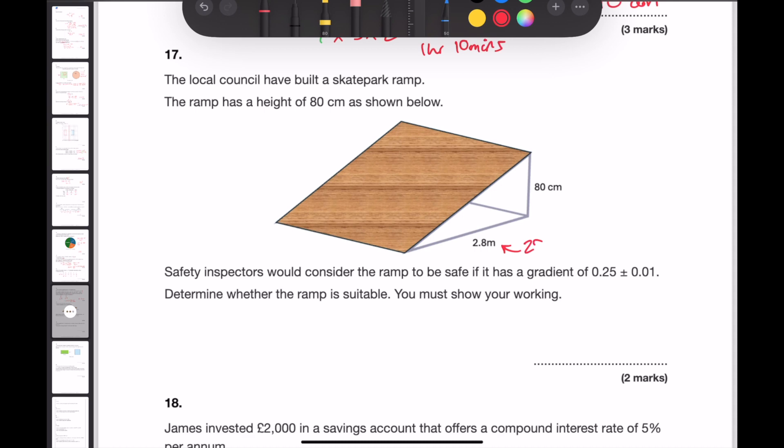To calculate the gradient, I divide the change in y divided by the change in x. So 80 divided by 280 gives me 0.2857. This is greater than the 0.25 plus or minus 0.01. The greatest this could be is 0.26. And because 0.2857 is greater than 0.26, this is not safe.